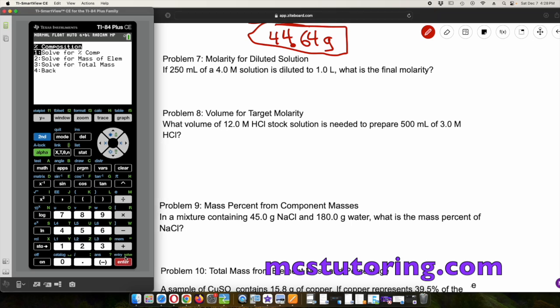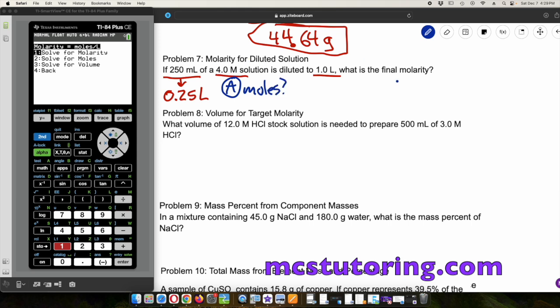Molarity for the dilution problem. 250 milliliters for a 4 molarity solution is diluted to one liter. What's the final molarity? First we have to convert, that's 0.25 liters. The first thing we have to do is find out how many moles do we have. So A is how many moles, and then the B part is going to be what's the molarity. I just want you to know that this is a two-step problem.